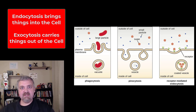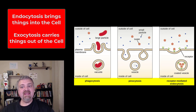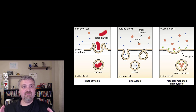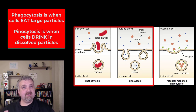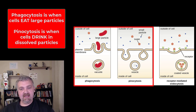So endocytosis, this bringing things into the cell, we see there are three different ways to do it. We have phagocytosis, pinocytosis, and receptor-mediated endocytosis. Phago means to eat, so phagocytosis is cell eating — when large, solid particles are going to be swallowed up and taken in by a cell.